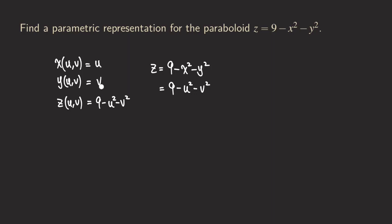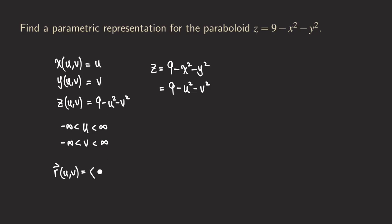There are no restrictions for u and v, so u goes from negative infinity to infinity, and same for v. If you want to write it in vector form, we can write r of (u, v) equal to the vector with first component u, second component v, and third component 9 minus u squared minus v squared.